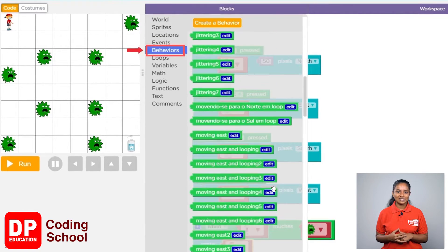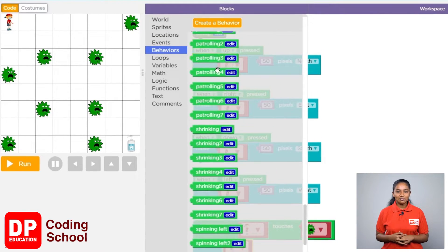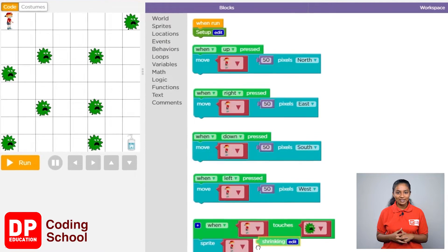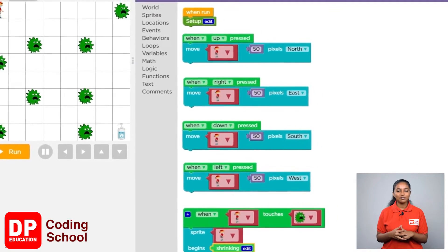I clicked on behaviors. From these green blocks, drag the block called shrinking and place it in front of begins.